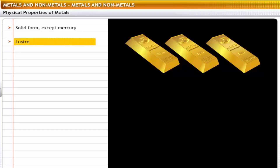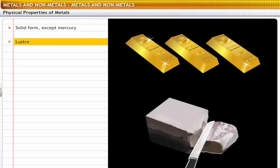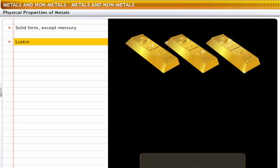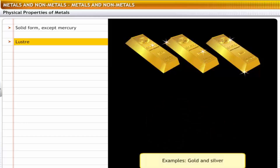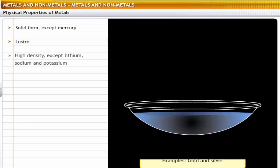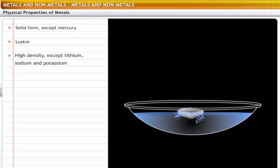All metals are lustrous; metal surfaces shine when they are freshly cut. For example, gold and silver are popularly used for making jewelry because of their luster.